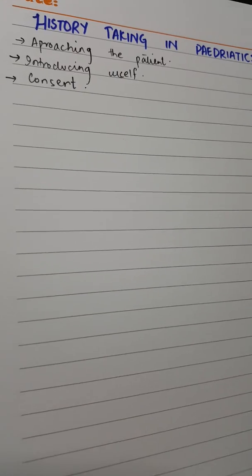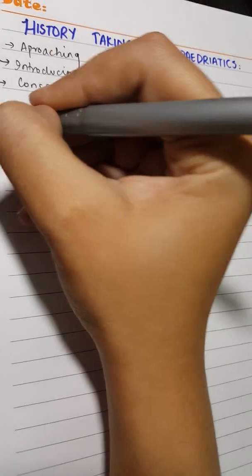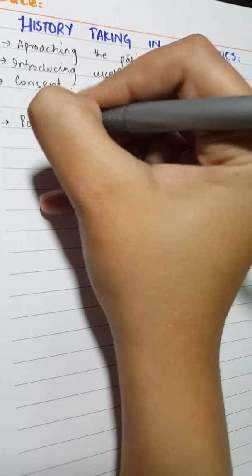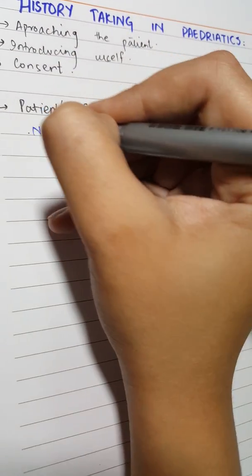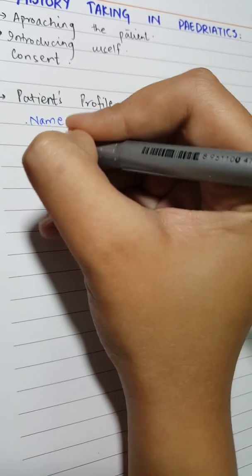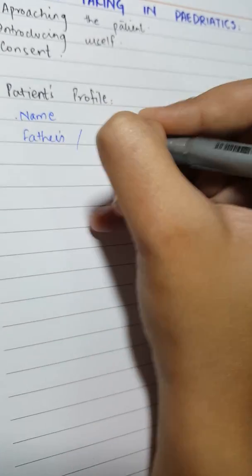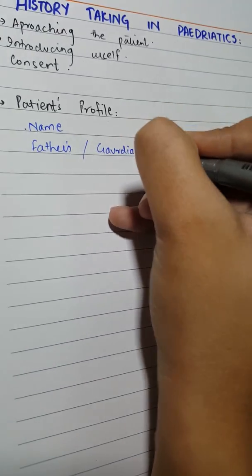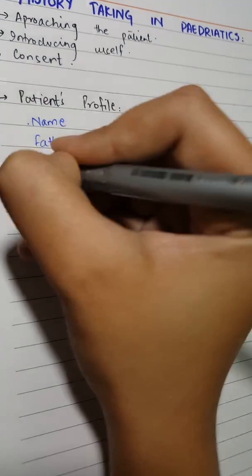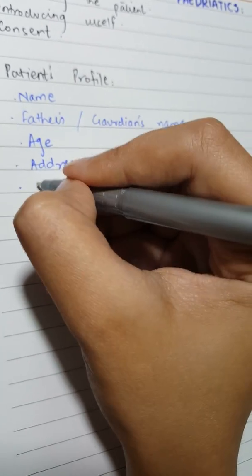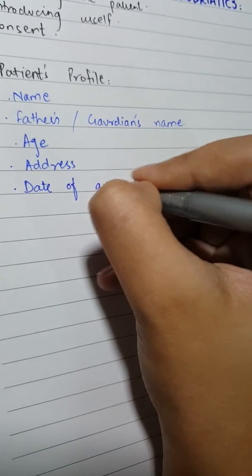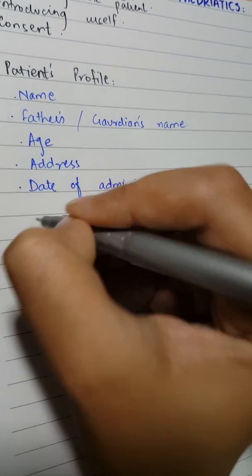The next point on the list is the patient's profile. In the patient's profile you cover the following points: name, father's name or guardian's name, age, address, date of admission, and time of admission.